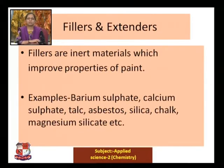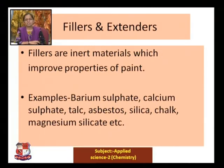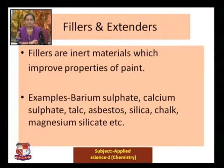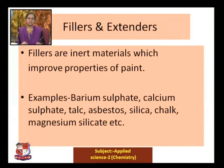Another important component is fillers and extenders. Fillers are inert materials which improve properties of the paint. Examples of fillers include barium sulfate, calcium sulfate, talc, asbestos, silica, chalk, and magnesium silicate.